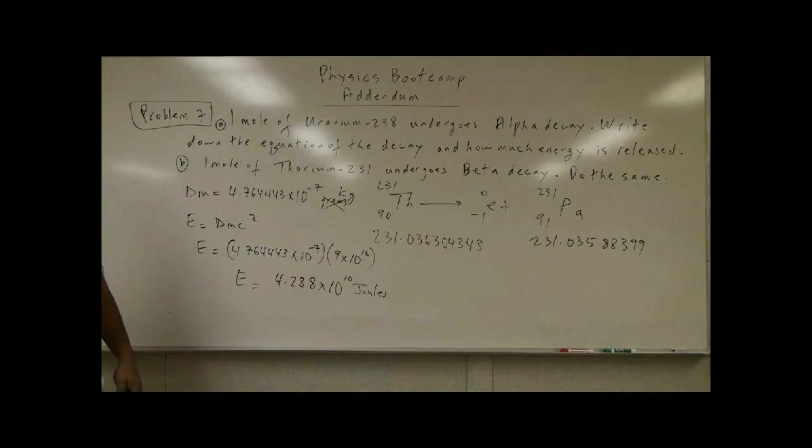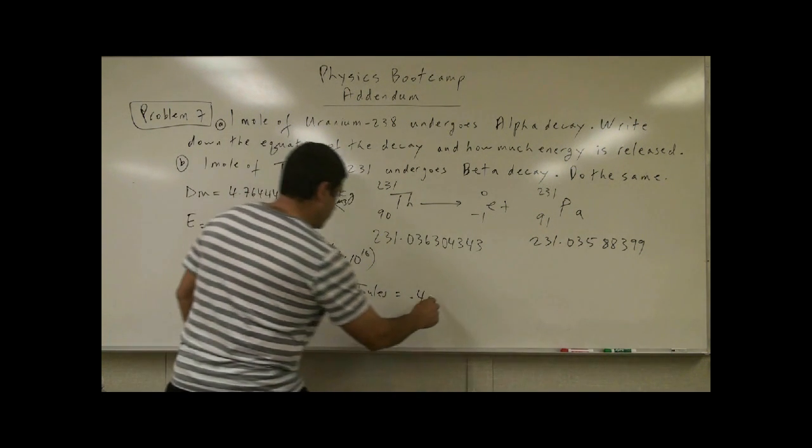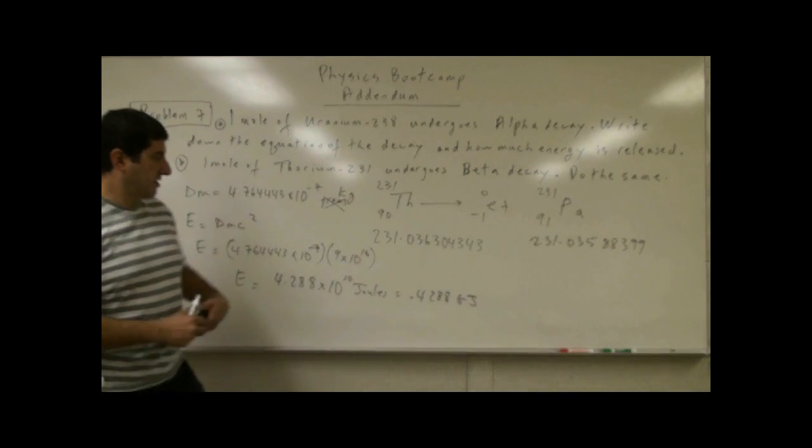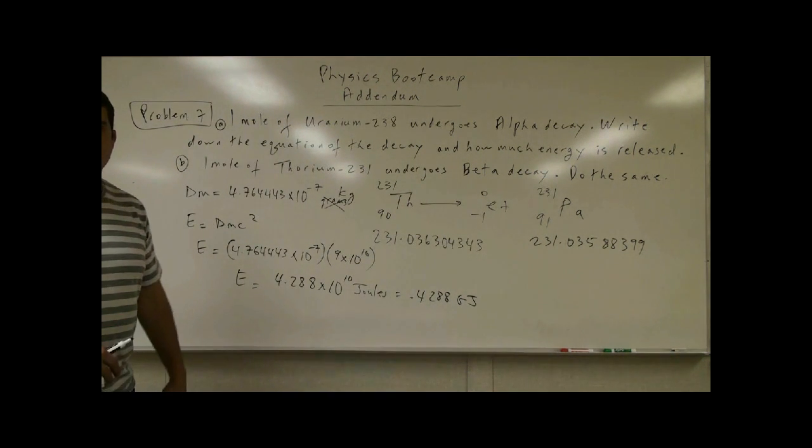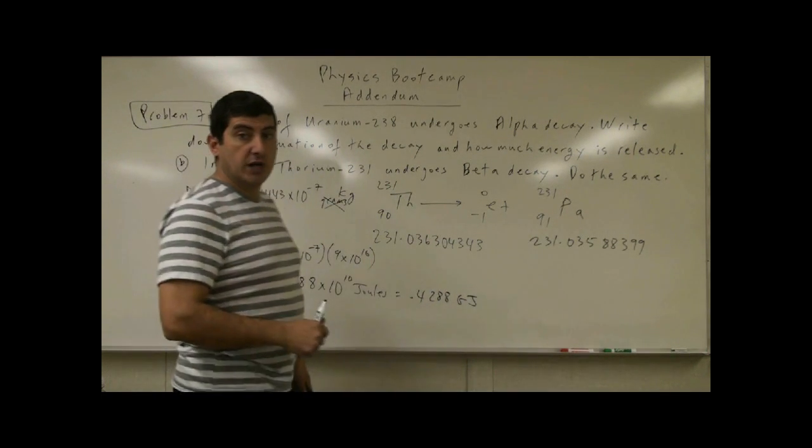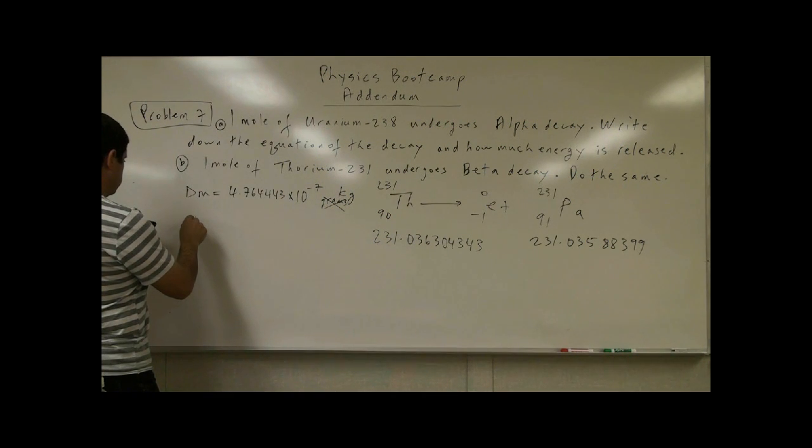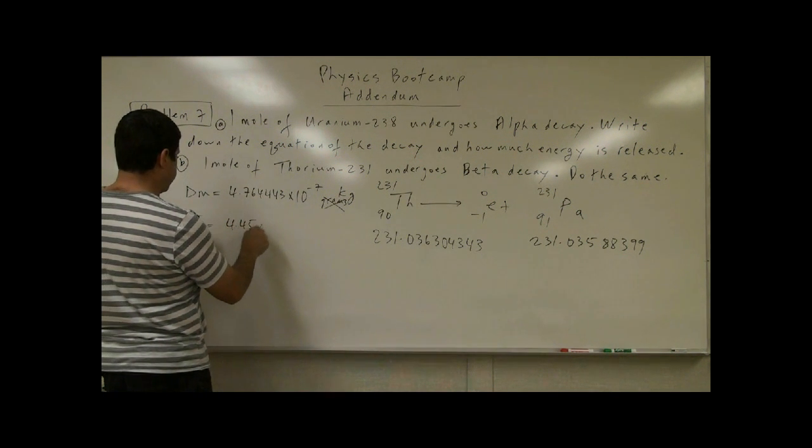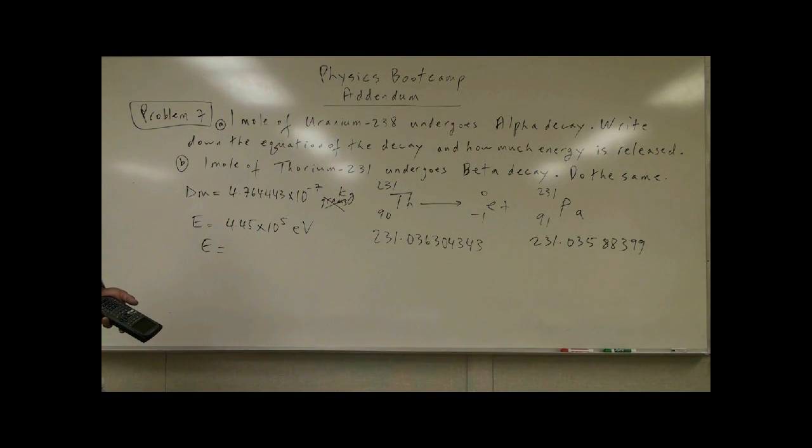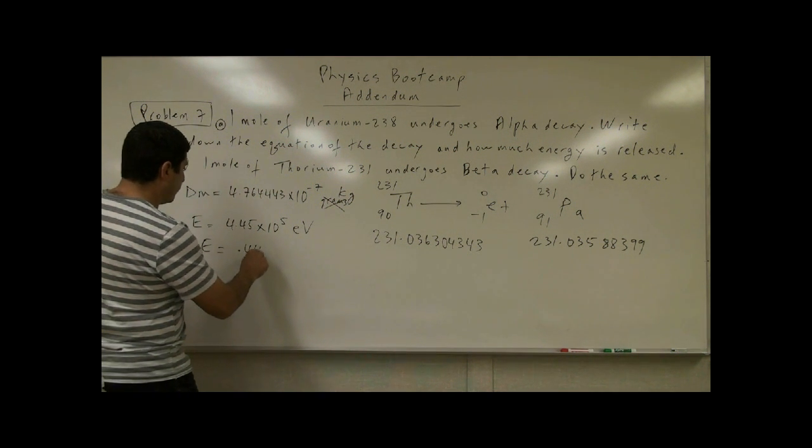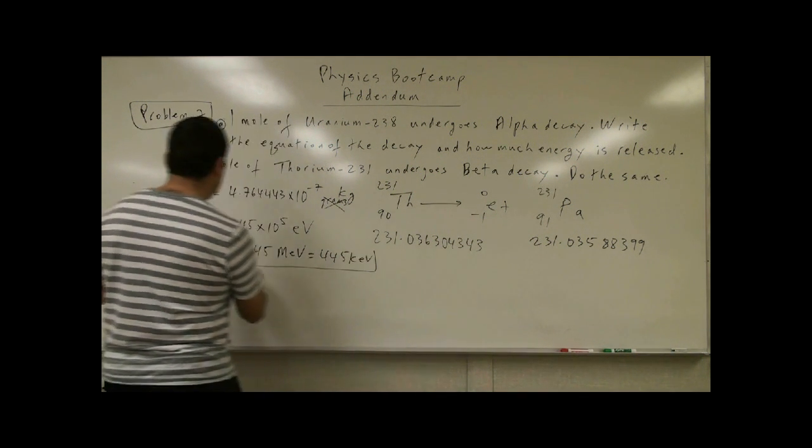If we wanted to do in terms of gigajoules, it's a little less energy. So this would be 0.4288 gigajoules. Since the two masses were more similar, the loss of mass was less, and the release of energy was less. If we convert that to per atom, we're going to divide it by Avogadro's number. The energy released would be 4.45 times 10 to the 5 electron volts. We could say 0.445 mega electron volts, or we could say 445 kilo electron volts.